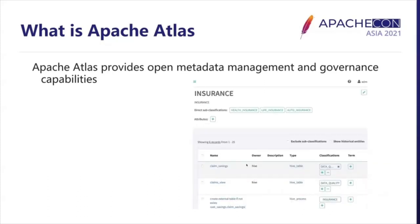Apache Atlas also has the ability to dynamically create classification tags such as PII, data quality, sensitive, or any other tags you want, and associate those classification tags to metadata. This helps analysts and data scientists quickly and easily understand a dataset. Classifications can be tagged on any Atlas entity. For example, tagging a Hive ETL workload as data quality immediately tells users that it is an ETL job for data quality. Users can also perform search by classification, and Atlas will return all entities tagged with that classification.